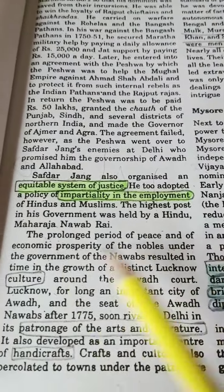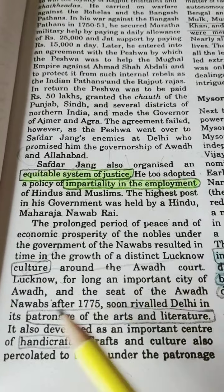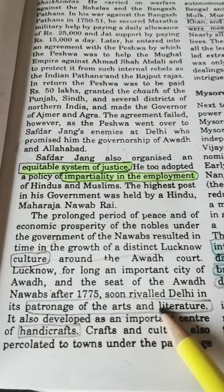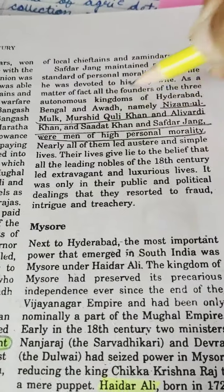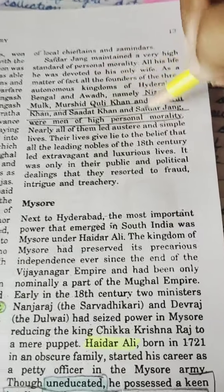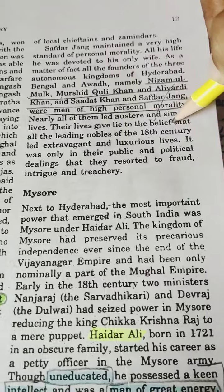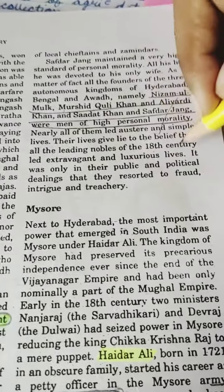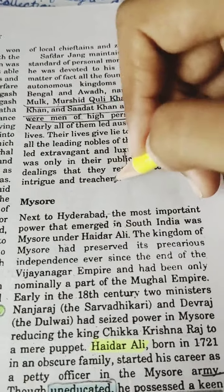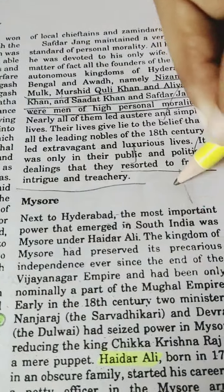A prolonged period of peace and economic prosperity in Awadh resulted in the growth of a distinct Lucknow culture around the Awadh court, with patronage of arts, culture, and handicrafts. Nizam ul-Mulk, Murshid Quli Khan, Ali Vardi Khan, Sadat Khan, and Safdar Jang were men of high personal morality. However, in their public and political dealings they resorted to fraud, intrigue, and treachery — and this is what ultimately took them down.